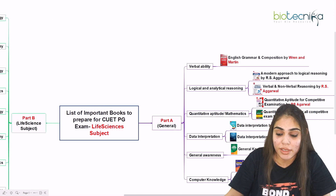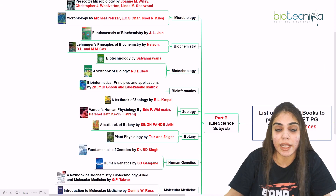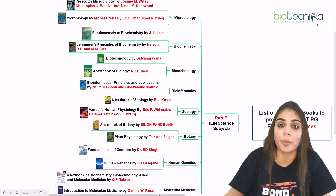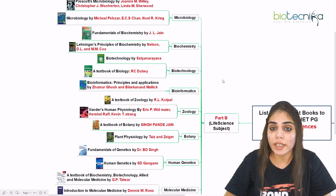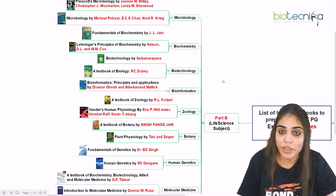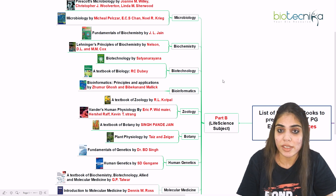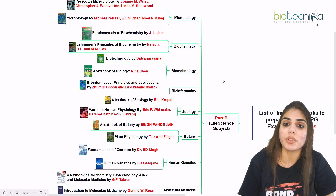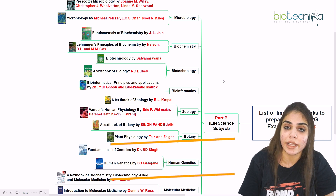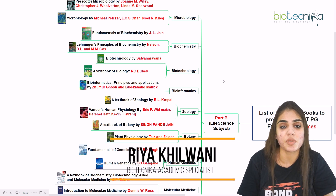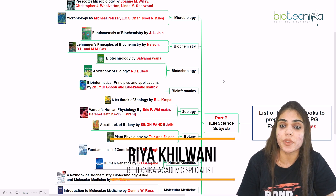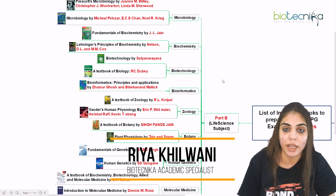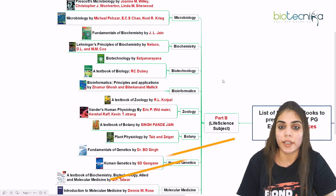So here we have discussed all the reference books needed to prepare for both Part A — the general subject — as well as Part B, which consists of the domain subjects. I hope you have got an idea about the reference books needed to prepare for the Life Sciences subject. If you like the information, do hit the like button and subscribe to the channel Technica. Thank you everyone, keep learning.